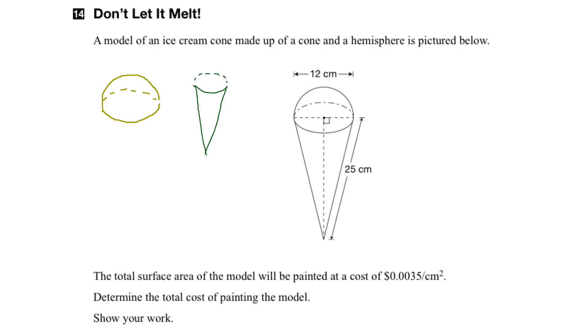So the total surface area would be the surface area of half of the sphere plus the surface area of the cone. Now we know that the surface area of a sphere is given by the formula 4πr² where r is the radius. But because we're only dealing with half a sphere, we're going to divide that by 2.